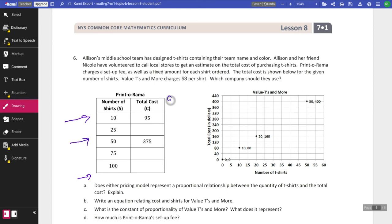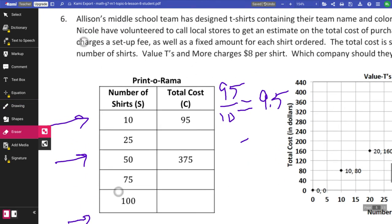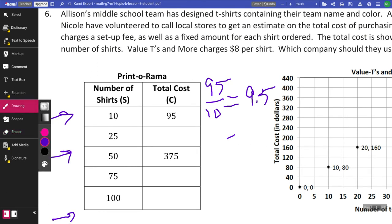So what we run into here, the situation that we run into on this one is we only have two sets of data that we can figure out. So let's take the 95 and divide that by 10 to figure out the constant of proportionality, which is 9.5. And let's see if this is the same over here. So we'll do 375. That's really messy. I'm going to zoom in a little bit more, guys. So maybe this is a little bit clearer for us. We'll do 375 divided by 50. And again, I'm okay with us using calculators on this.